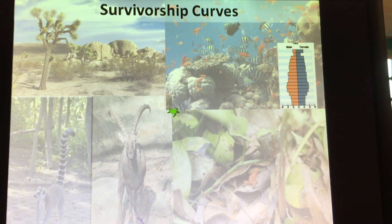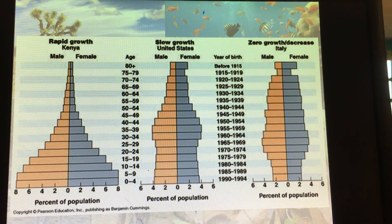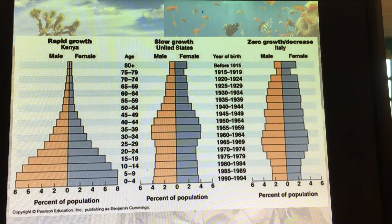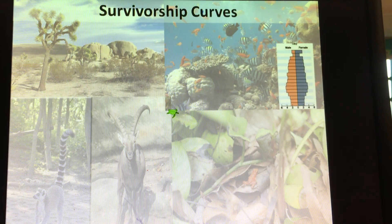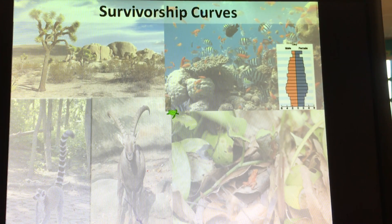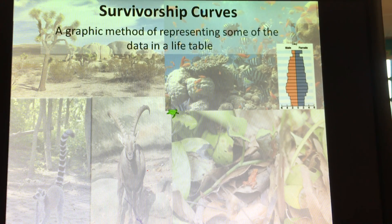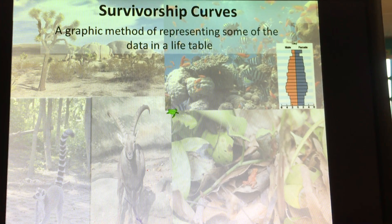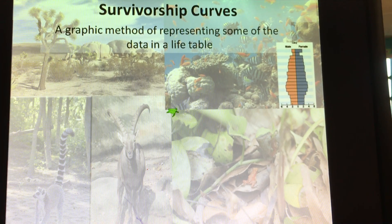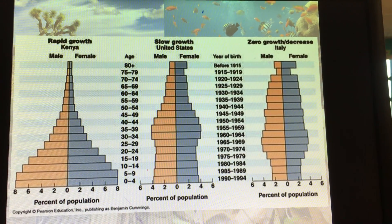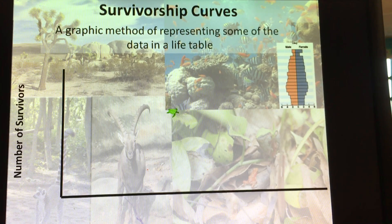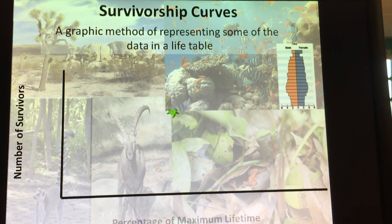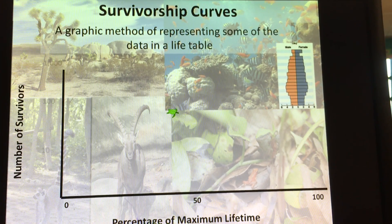When we look at life tables, we can start to make some graphs about the information and the reproductive success and strategies that we see. There's something called survivorship curves. Survivorship curves are a method of using a graph to represent the data in the life table. We're going to have the number of survivors on the Y-axis and the percentage of maximum lifetime on the X-axis.